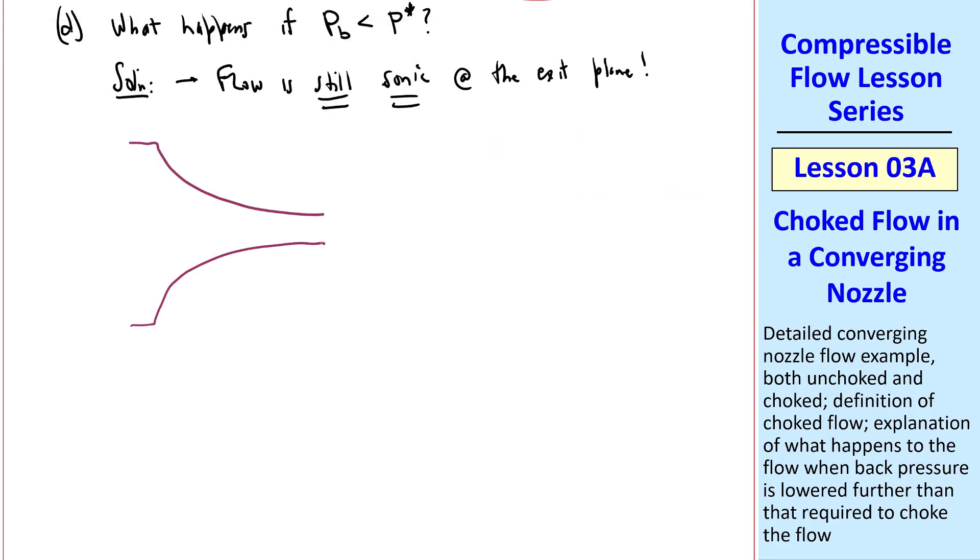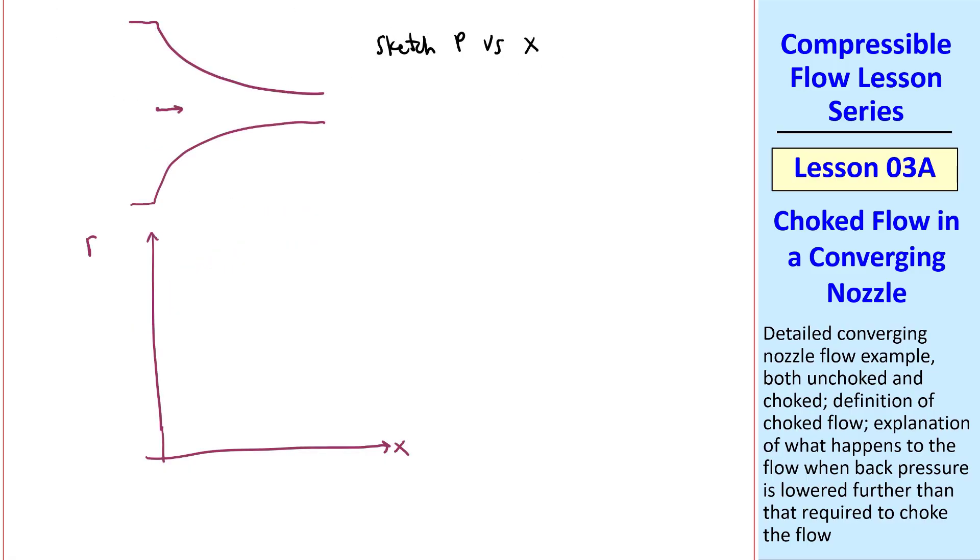For our duct, let's sketch pressure P versus X, where we'll define X as starting at the entrance to the duct. And we'll do this non-dimensionally, so we'll actually plot P over P-naught, and our scale will be 0 to 1, and the X-axis goes from X equals 0 to X at the exit plane. Let the first case be the trivial case, where Pb equal P-naught. In other words, there would be no flow, since there's nothing to drive the flow. By the way, let me label P-naught and back pressure Pb. So this would just be a horizontal line. We'll call this case A.